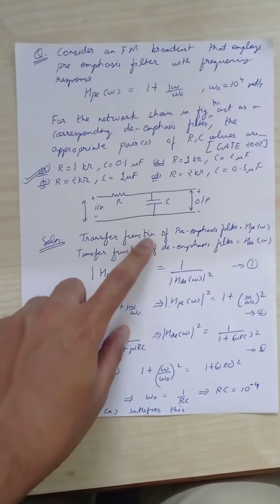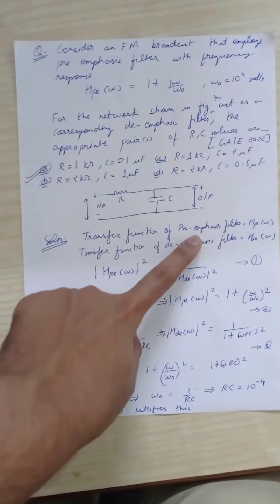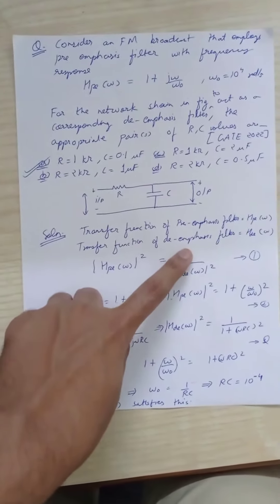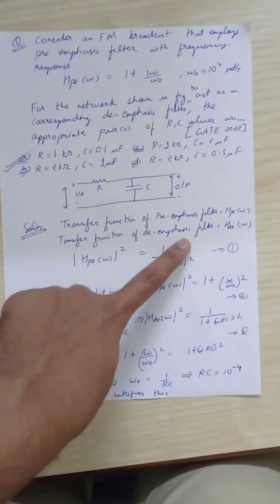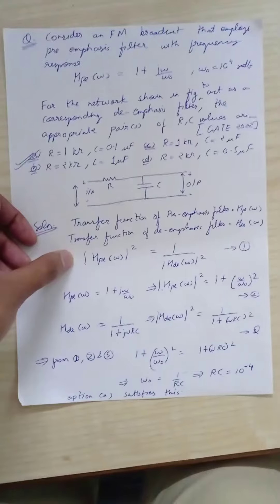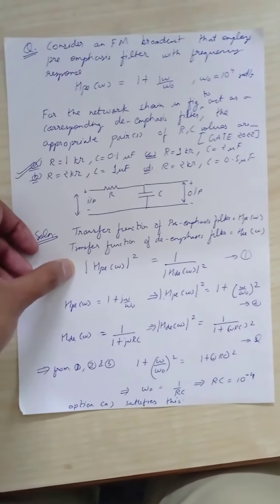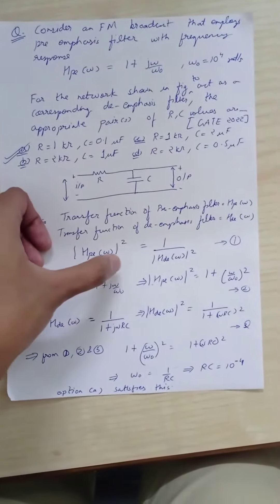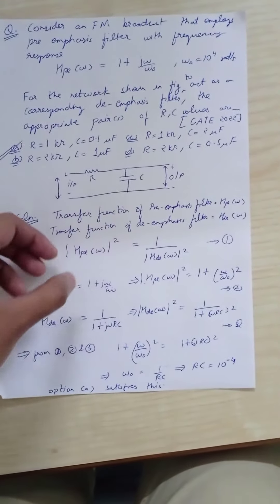Let's take the transfer function of the pre-emphasis filter as Hp(ω) and the transfer function of the de-emphasis filter as Hd(ω). The relationship between the transfer functions is that |Hp(ω)|² equals |Hd(ω)|².